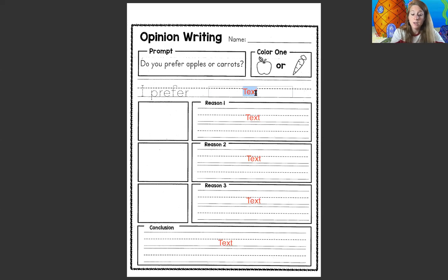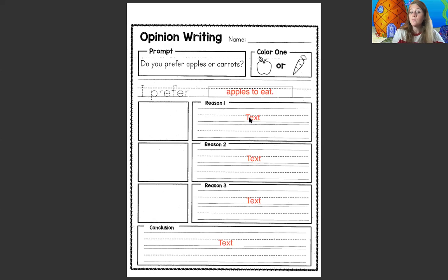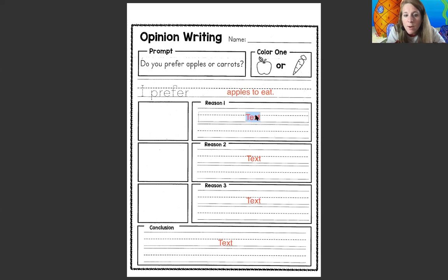So I'm gonna say I prefer apples. I prefer apples to eat. Now, before we go writing this, I want to make sure you guys understand — look how small these lines are. We cannot write really big. Some of you like to write with really big letters. Take your time, don't write really big, write nice and small on the lines. Take your time and make sure you're spacing. If you need help with spelling, ask someone at home. So let's just take it nice and slow.